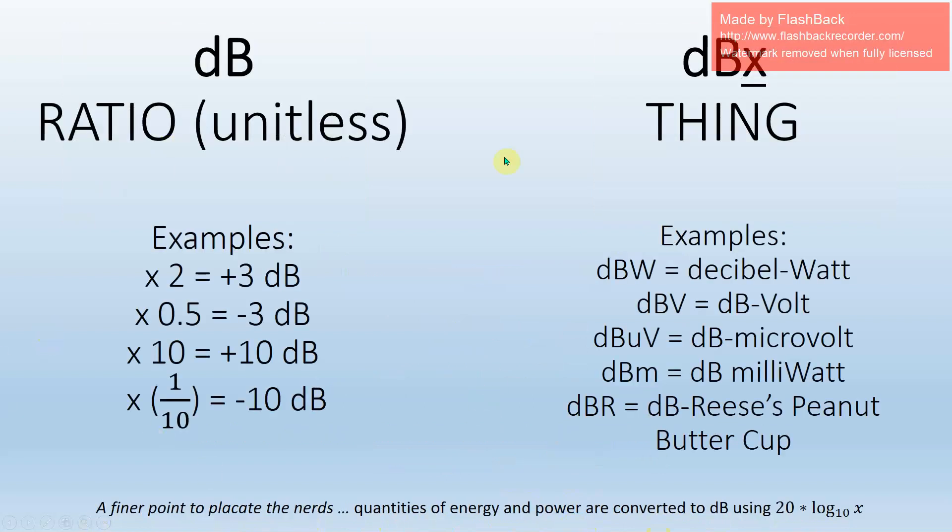And I've thrown some more examples right here. If you double something, you have plus 3 dB. If you cut it in half, you have minus 3 dB. If you multiply it by 10, it's plus 10. Divided by 10 is minus 10. So I've taken multiplication and division and I've turned it into addition and subtraction. So just remember that the dB is a ratio. You're comparing one thing to another. And then if there's a third letter on it, like dBW, dBV, dB mu V, dB little m, dBR—those are all actual things. That's expressing the quantity of things.